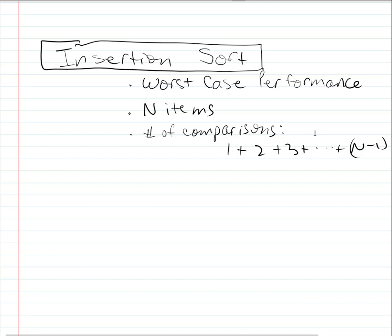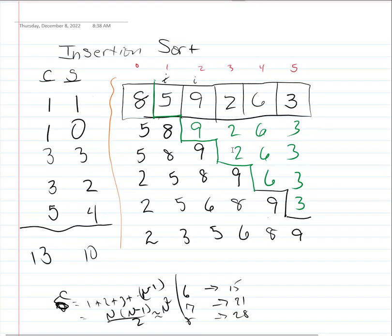We took a look at insertion sort previously to understand how it works and to capture the total number of comparisons. At each step of the algorithm we open up the array: the sorted portion starts at size one, moves to size two with five-eight, size three with five-eight-nine, and so on. Each time there are some comparisons and swaps, and if we count those we end up with values like 13 and 10.